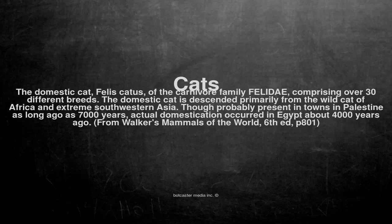The domestic cat is descended primarily from the wild cat of Africa and extreme southwestern Asia. Though probably present in towns in Palestine as long ago as 7,000 years, actual domestication occurred in Egypt about 4,000 years ago.